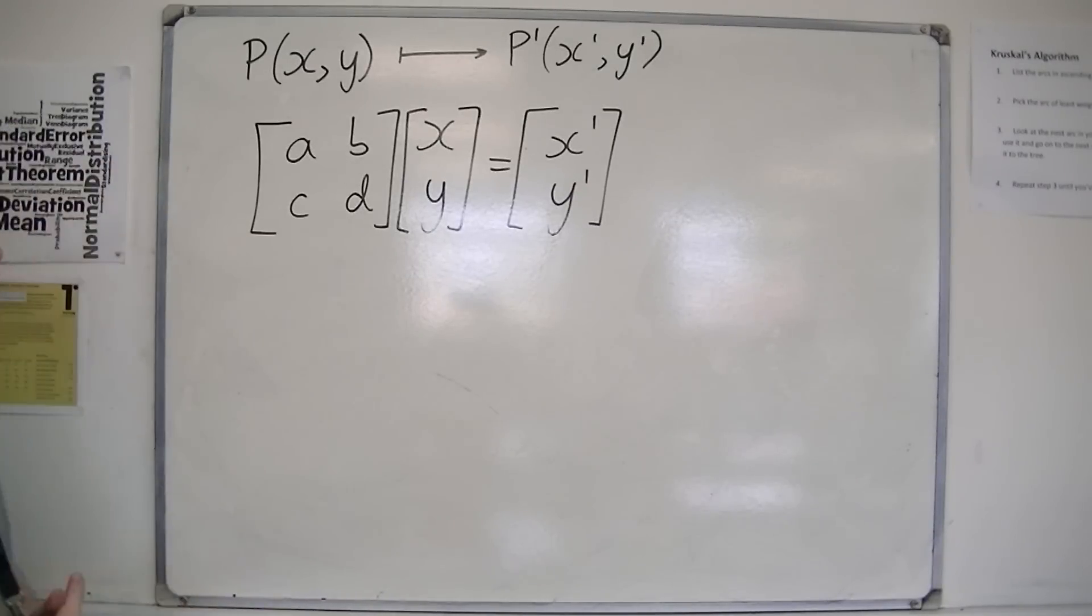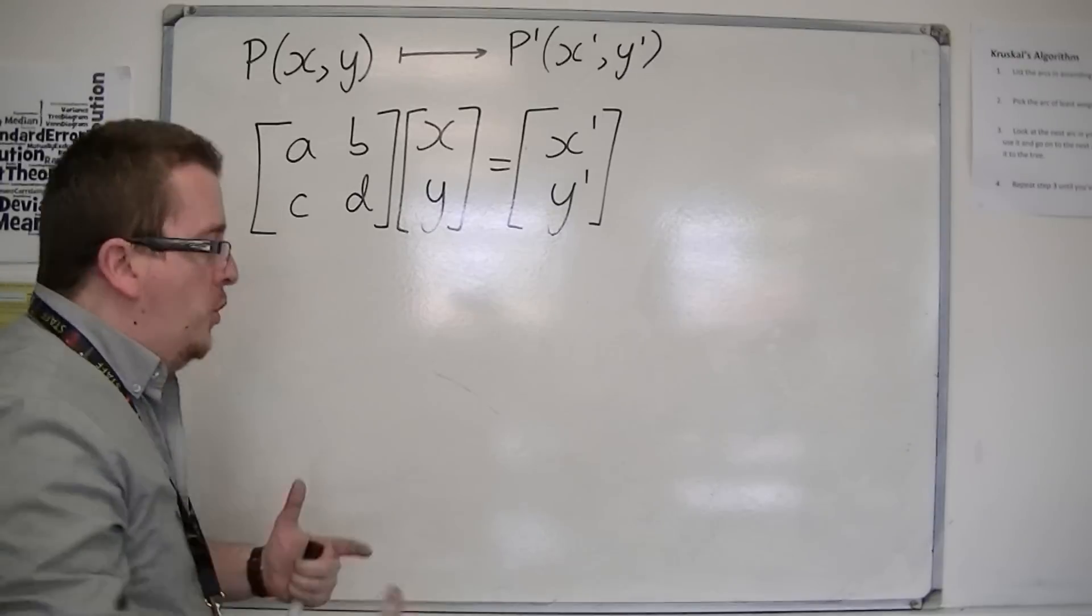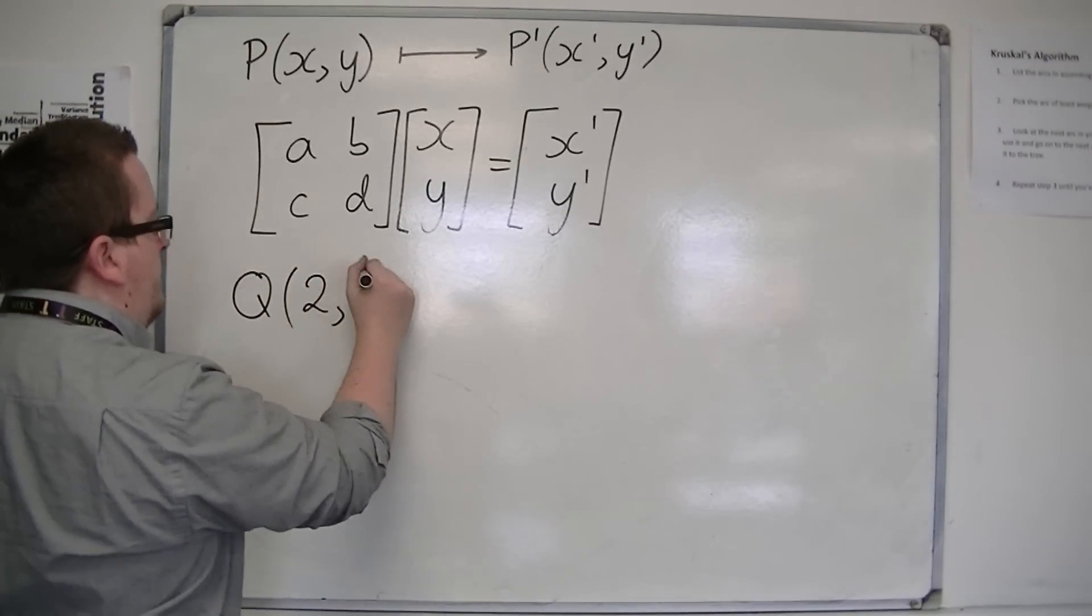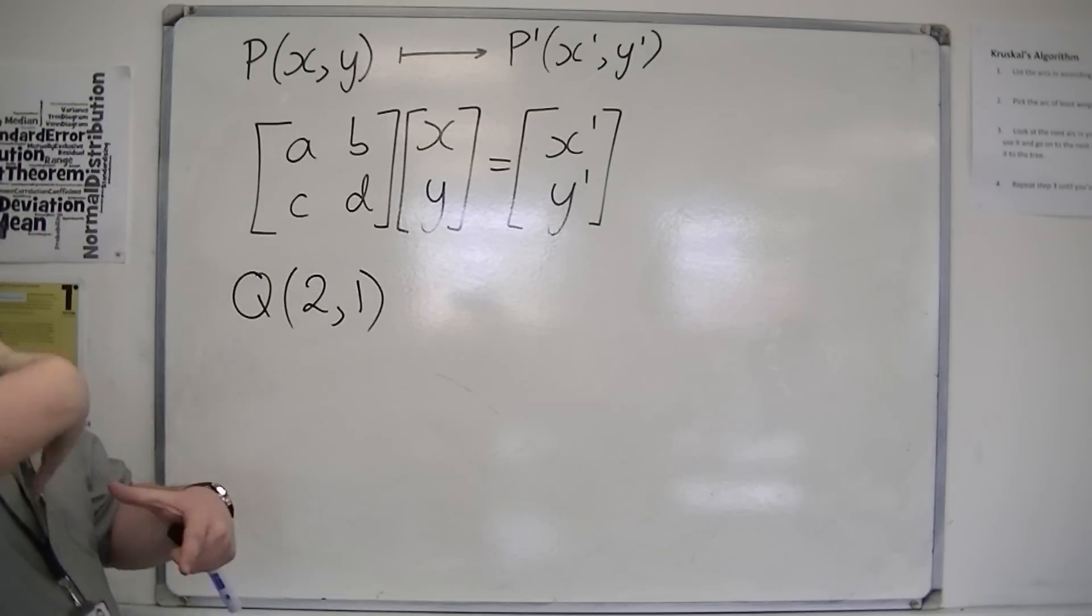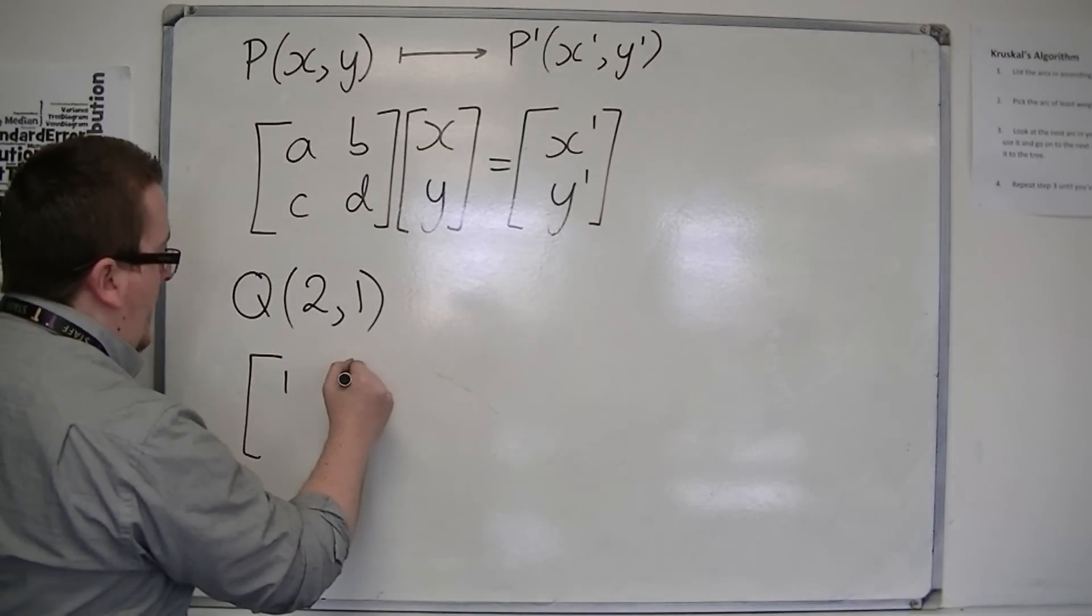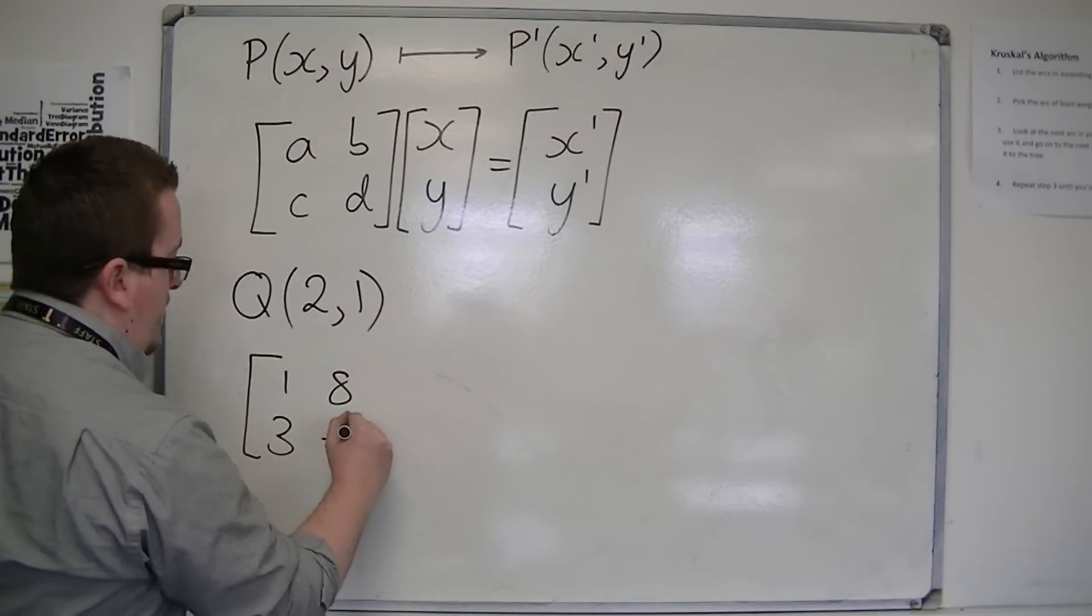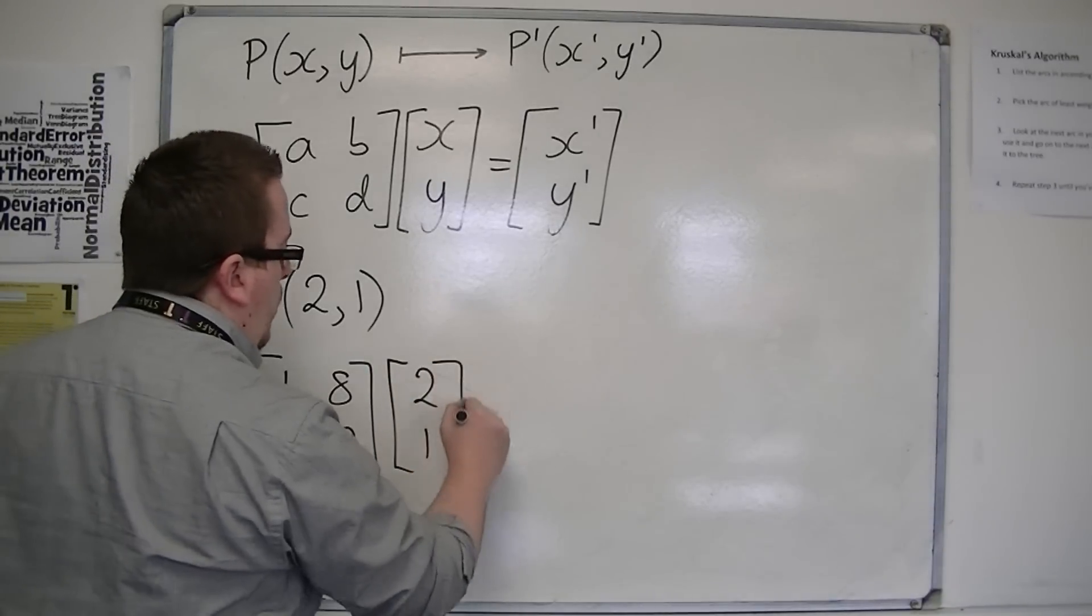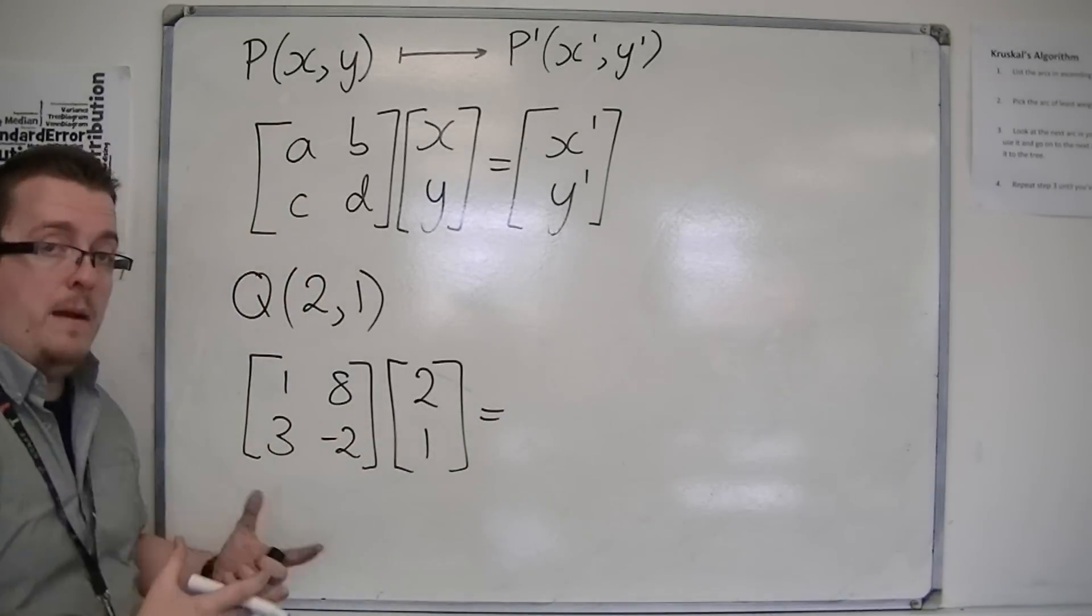So for example, if I had the coordinates of a point Q, and they were 2, 1, and I wanted to know what the matrix 1, 8, 3, minus 2 did to those coordinates, and where this matrix would map them to...